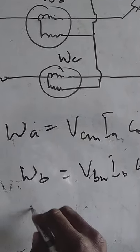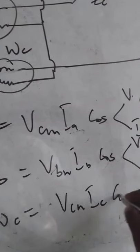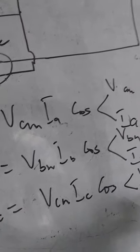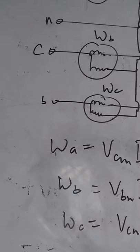And also with watt meter C, Vcn Ic cos the angle between Vcn and Ic. So you get the watt meter reading, then you add it together. That gives you the total power that is measured in the load.